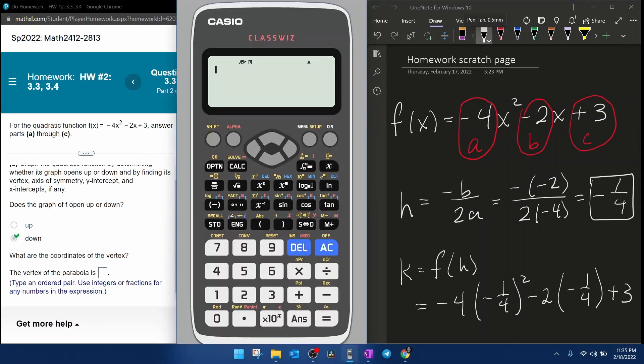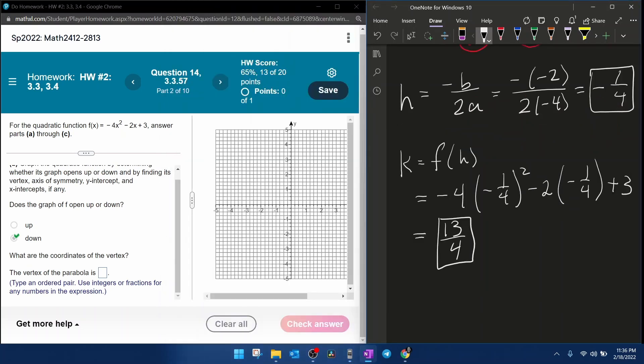what a great opportunity to use our calculator. So we're going to have negative 4 times negative 1 fourth, quantity squared, minus 2 times negative 1 fourth, plus 3,